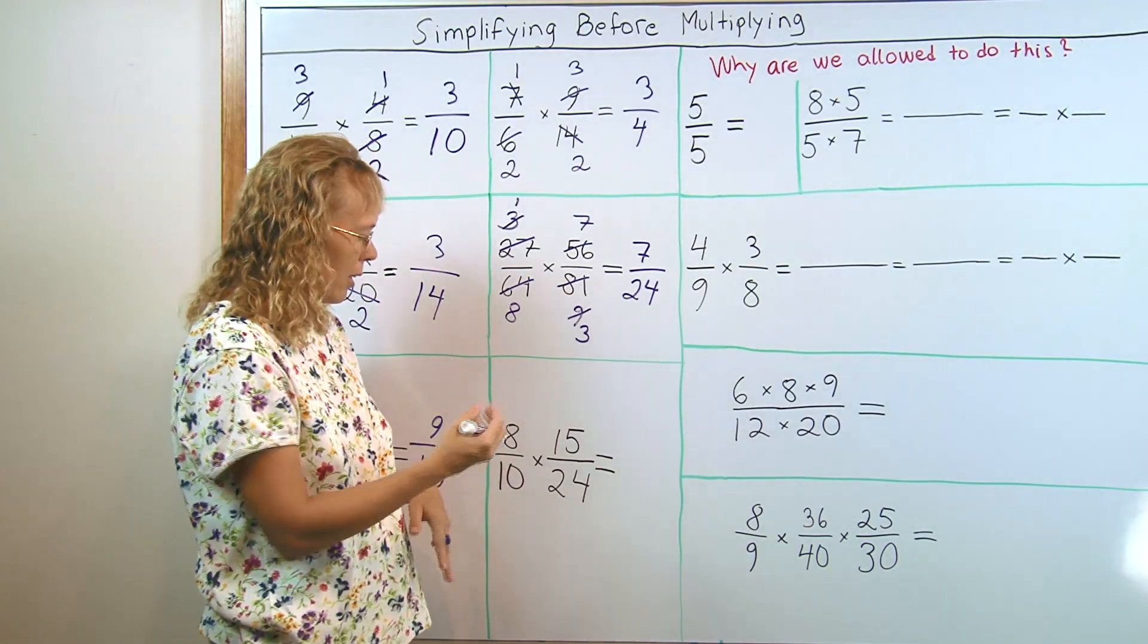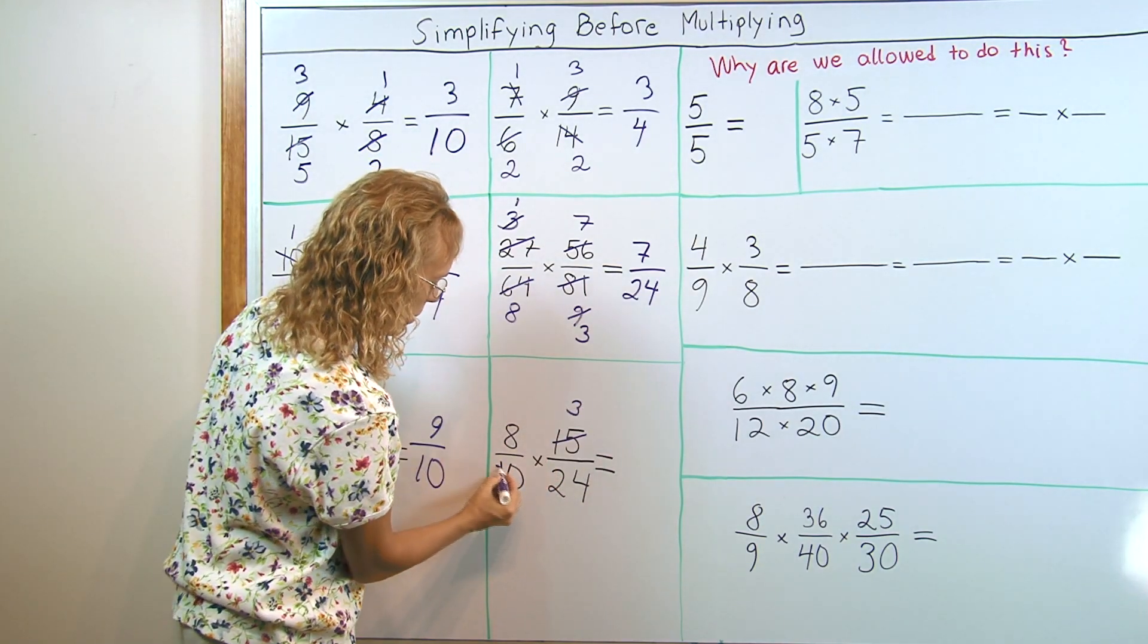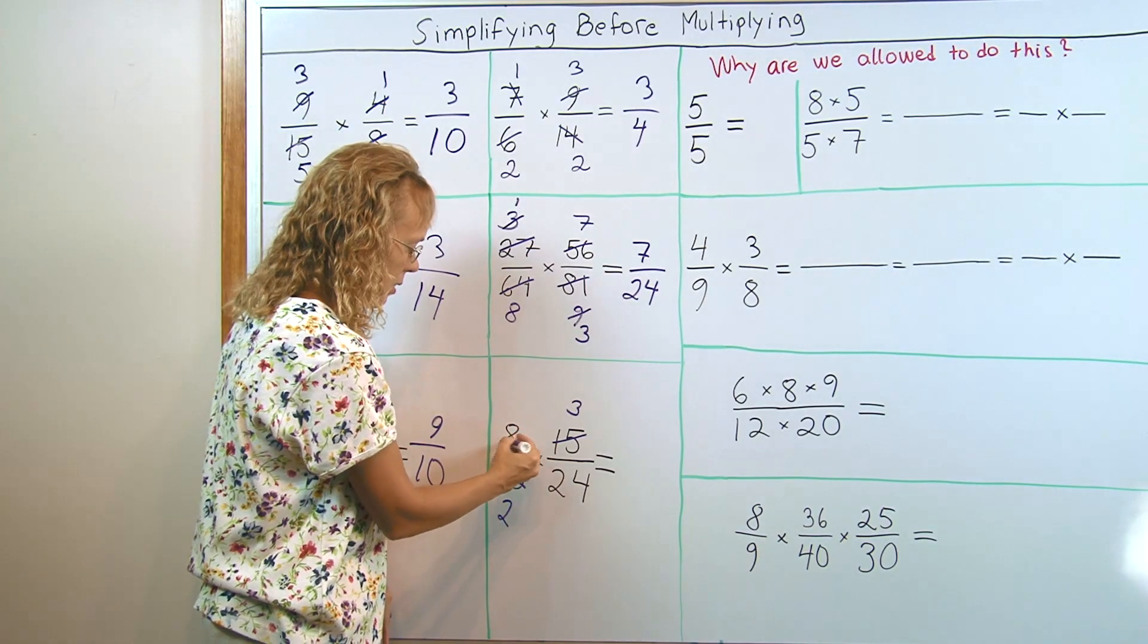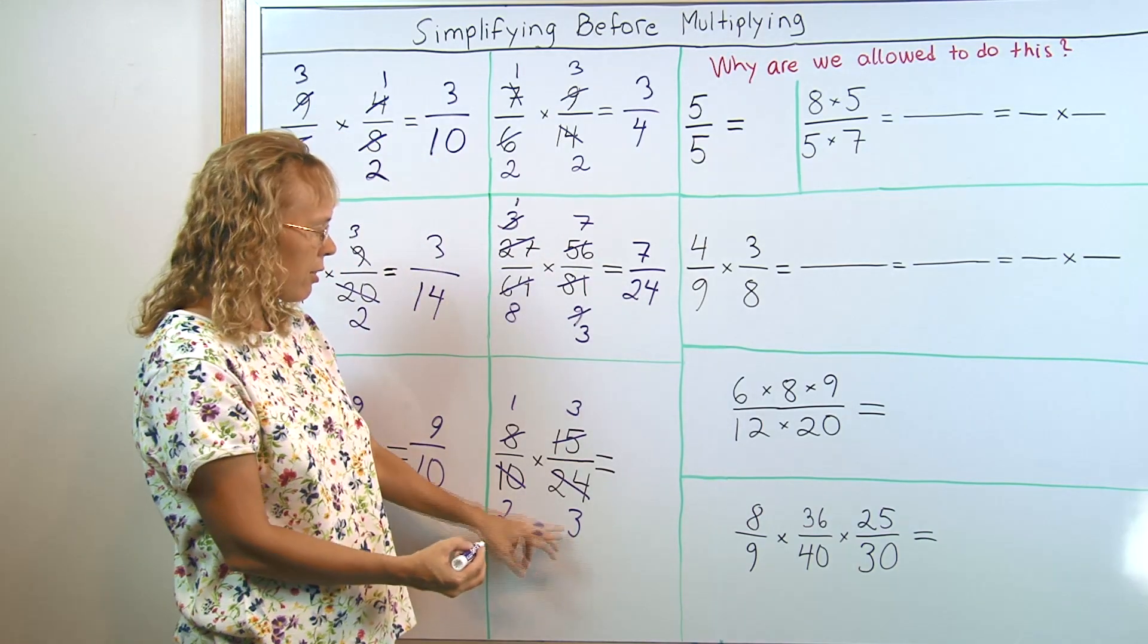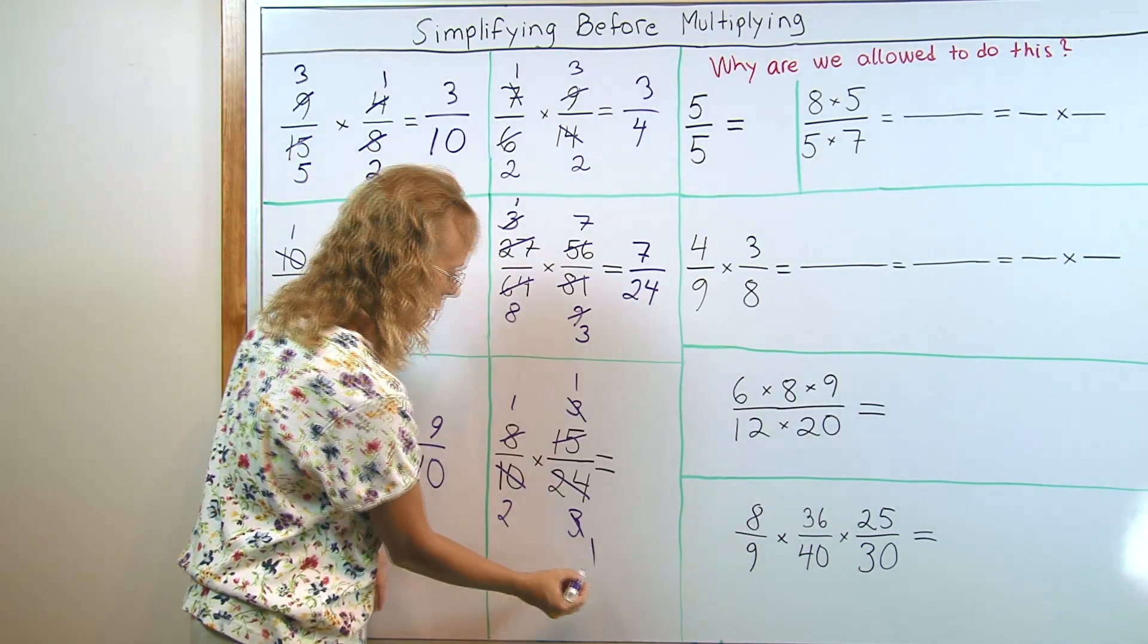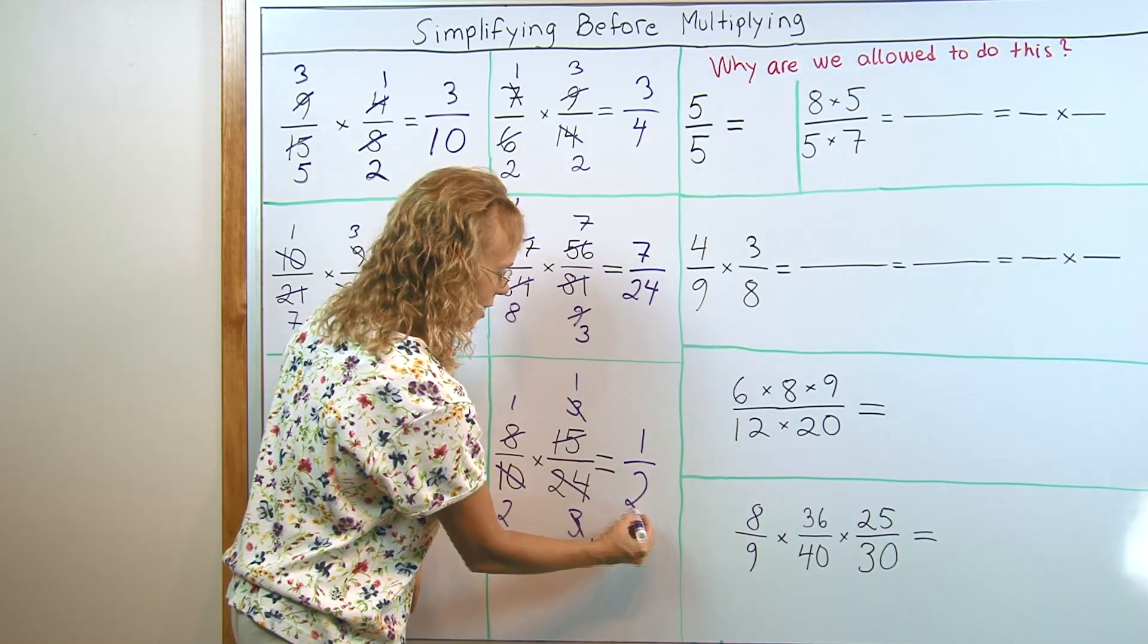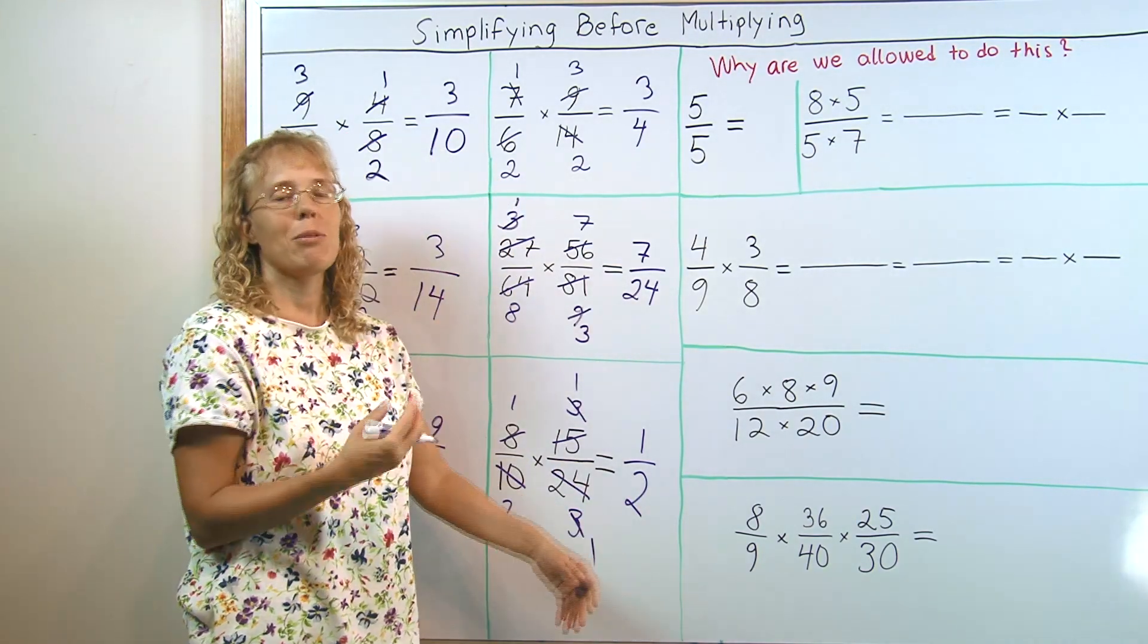Here, maybe I noticed first that 10 and 15 are divisible by 5. There's 3 here, 2 here. Then 8 and 24 are both divisible by 8. So I get 1 here and 3 here. And 3 and 3 are divisible by 3. So I can divide them by 3 and just get 1's. And now nothing left. 1 times 1 is 1, 2 times 1. That whole complicated thing simplified to 1 half before we even multiplied.